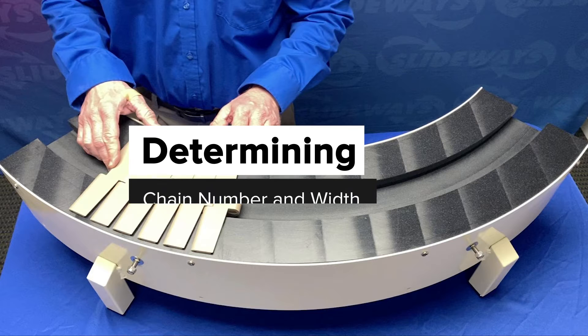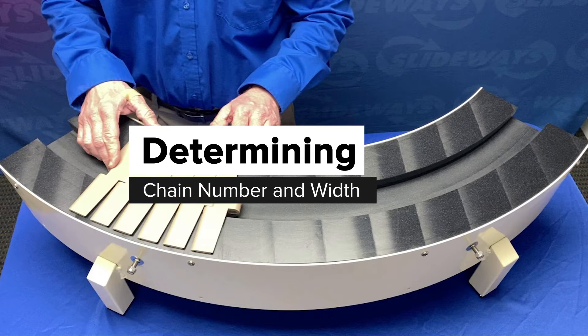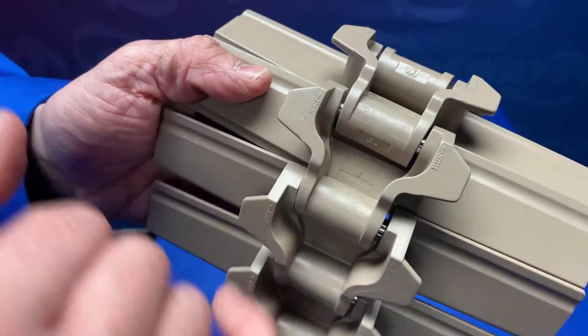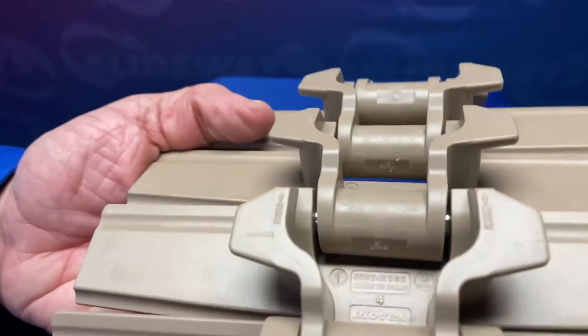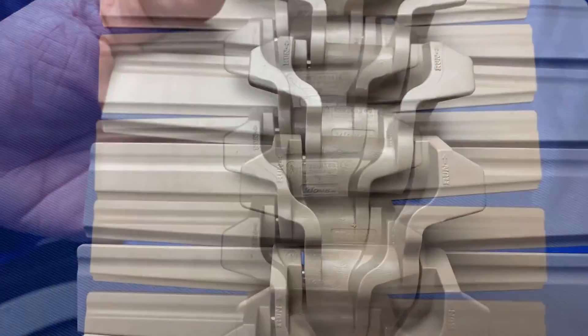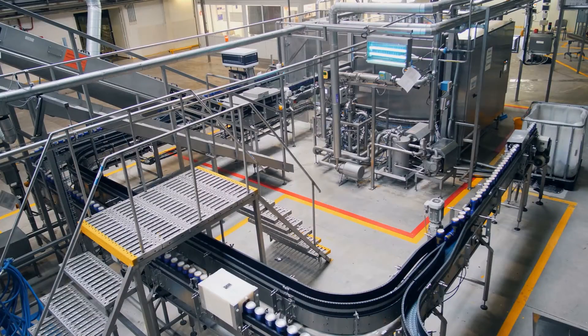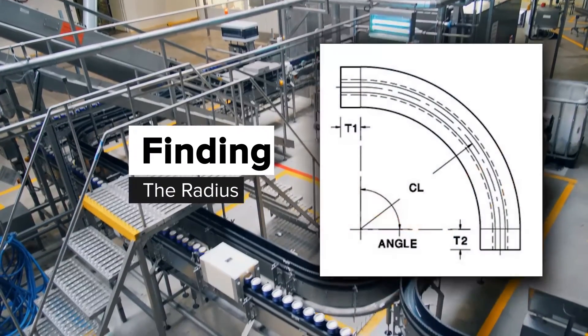Next we'll determine the chain number and width. You may recognize the chain type upon visual inspection. If not, ask the facility what type of chain they are using. If you are unsure of the chain type, flip the chain over. On the back of the chain should be the model number.